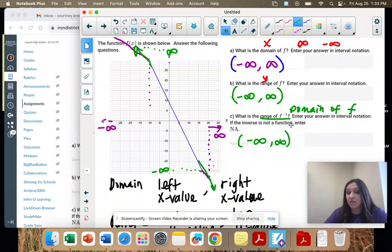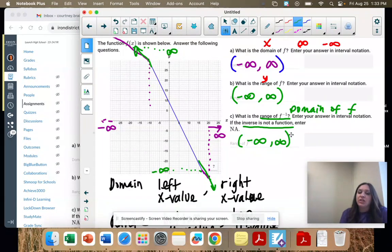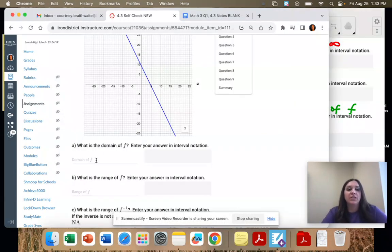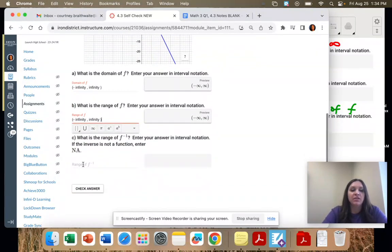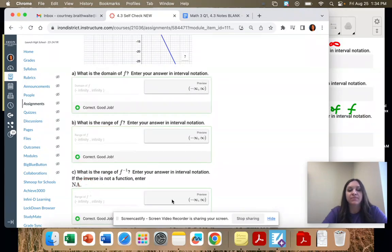And it is a function. I guess we should have checked that. The inverse is a function. It passes the vertical line test. It's also just going to be a straight line. So let's type that in. Parenthesis, negative, here's infinity, comma, infinity. And that's our answer on all three of these. I'm just copy, paste, copy, paste.